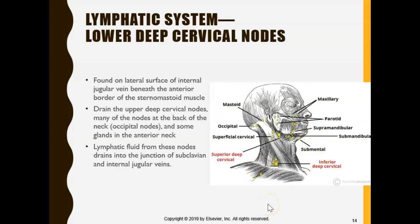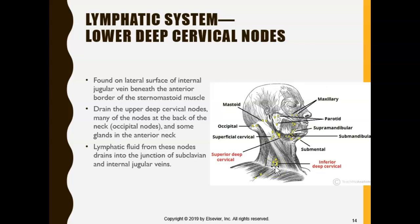If you have cancer and it is very close to the lower deep cervical nodes, that's serious because it will hit the bloodstream soon and circulate all over the body. If it's caught higher up, there is a chance of preventing it from moving deeper. When cancer reaches the lower deep cervical nodes, it's close to the internal jugular vein, and from there it can circulate to the heart and throughout the body.